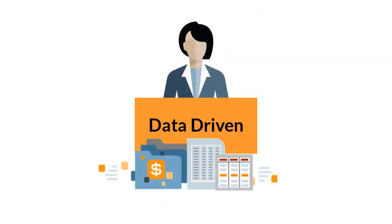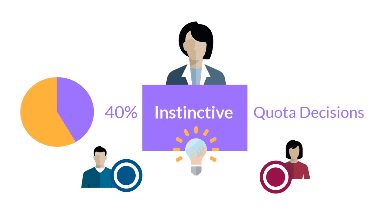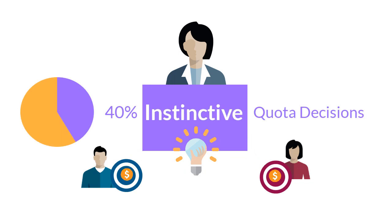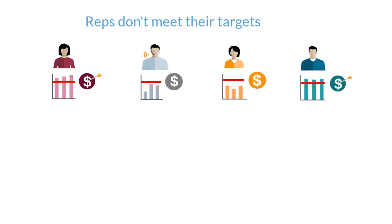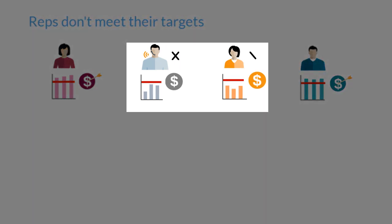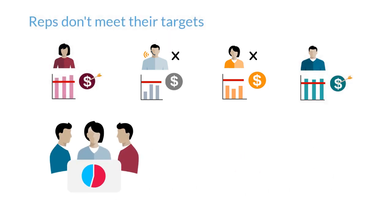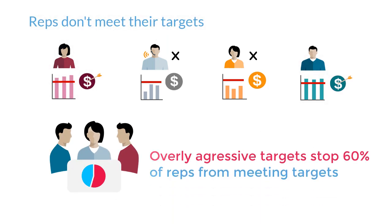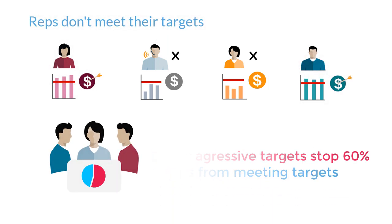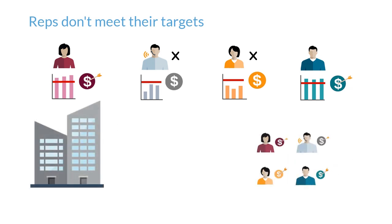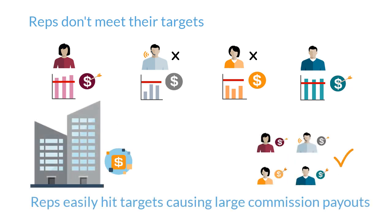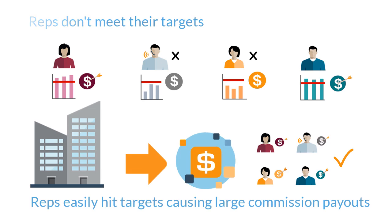Although it should be a collaborative and purely data-driven process, 40% of executives rely on instinct when setting quota targets. Skewed, instinctive targets can cause two problems: either many sales reps don't meet their target—a recent study indicates overly aggressive quotas prevent upwards of 60% of reps from reaching their targets—or reps easily meet targets, causing large commission payouts.